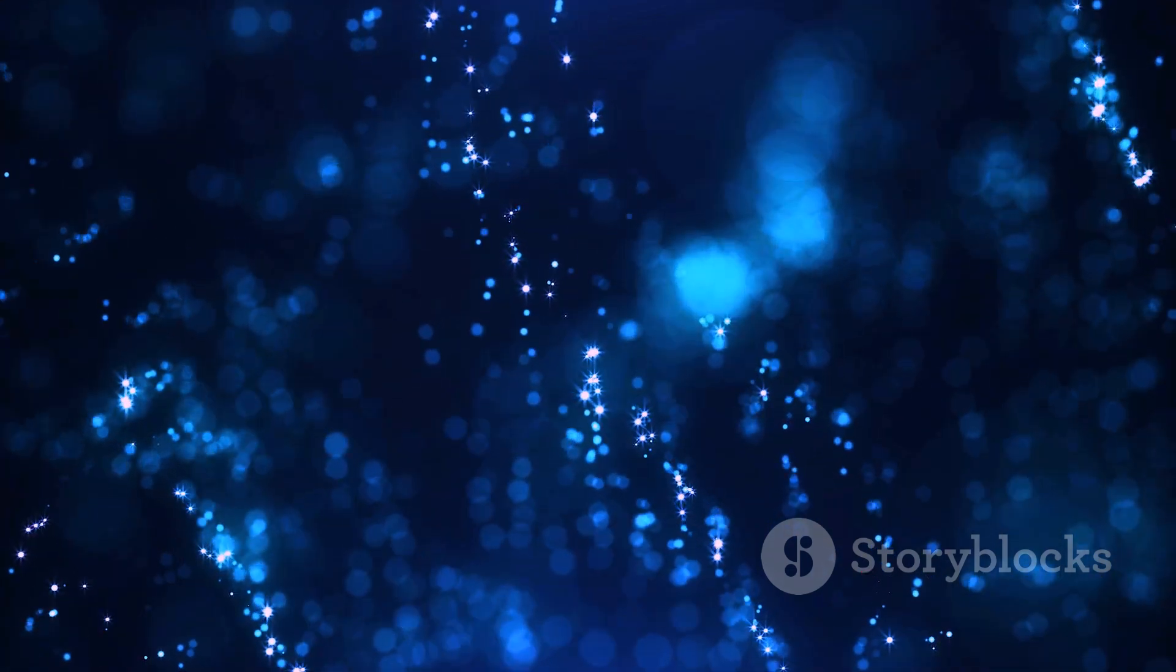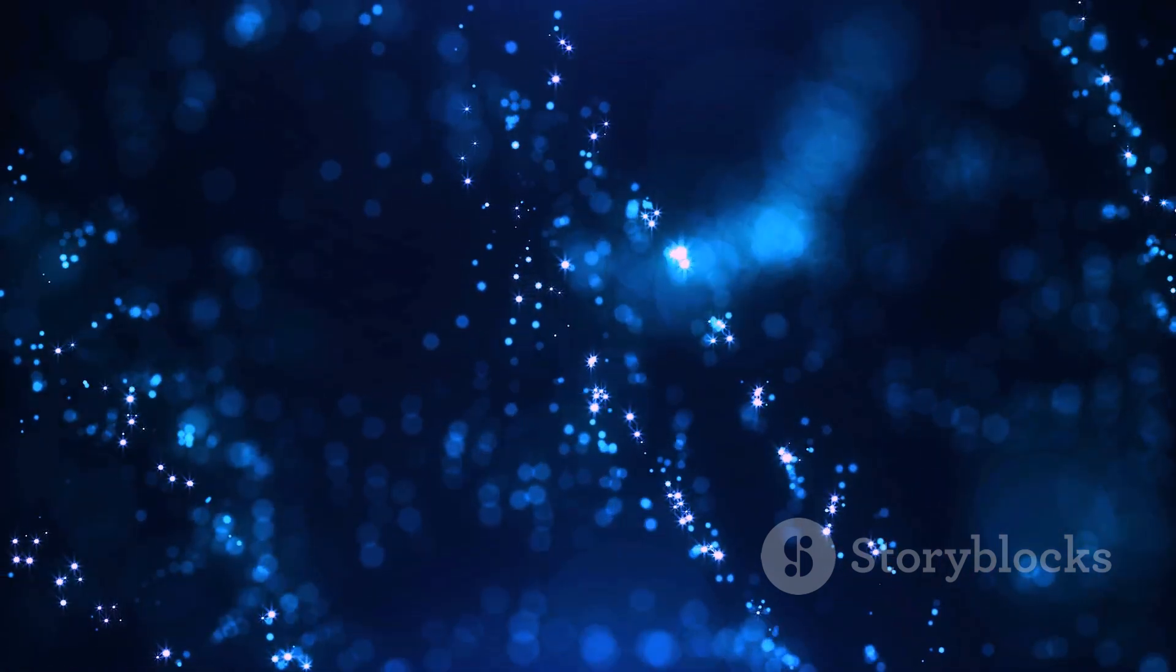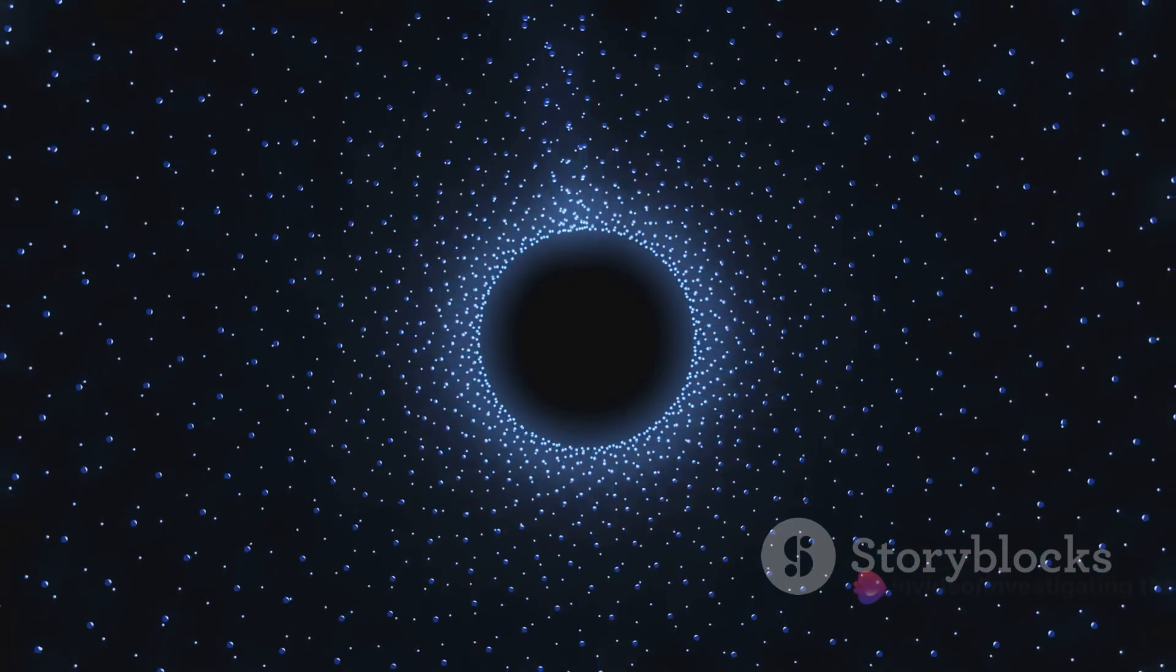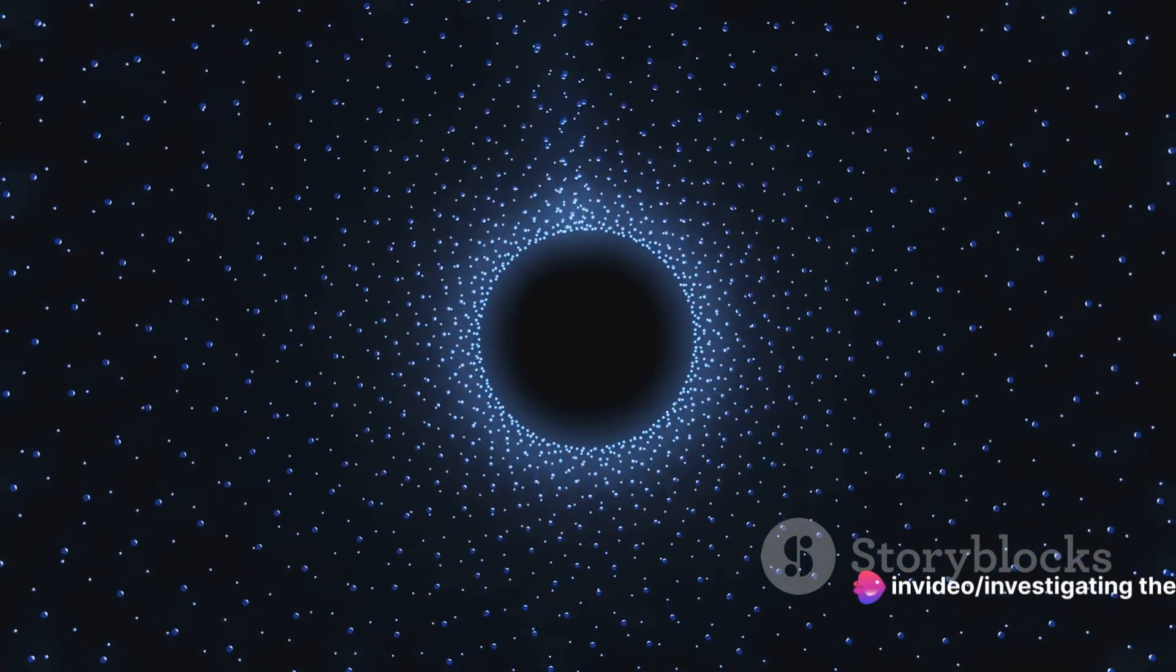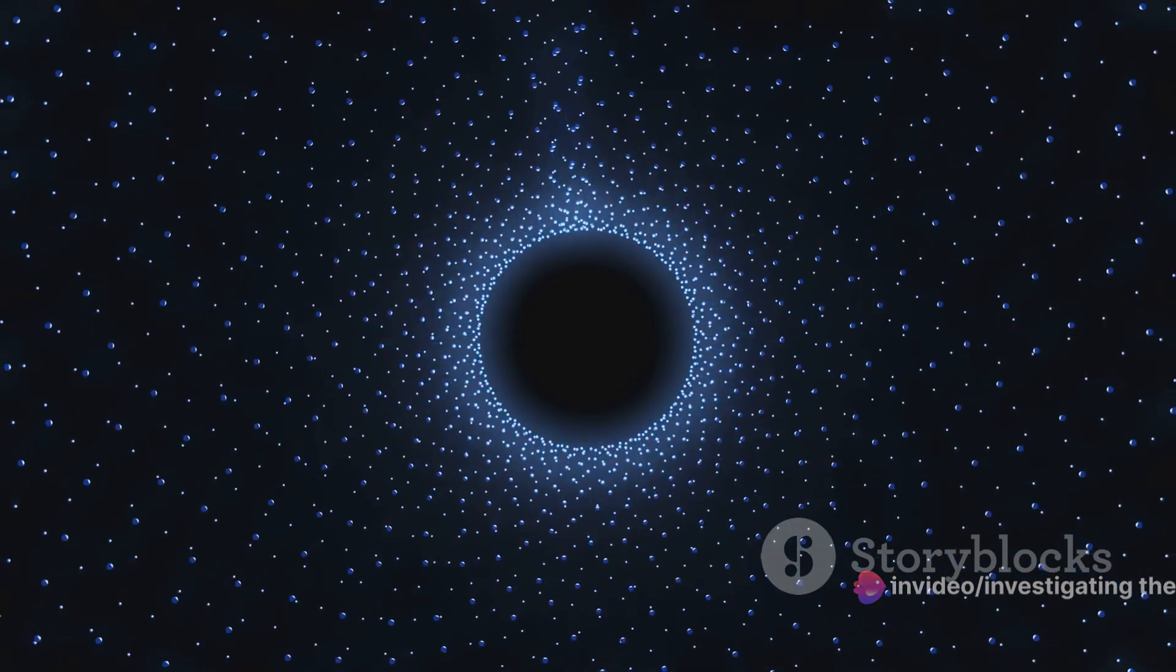This means there's always a tiny chance the particle could be found on the other side of the barrier. But how does this happen? Well, it's all thanks to the inherent fuzziness of quantum mechanics. Heisenberg's uncertainty principle tells us that we can't simultaneously know the exact position and momentum of a particle. This uncertainty allows the particle to borrow some energy and slip through the barrier, repaying the borrowed energy afterward.